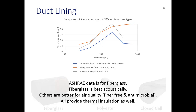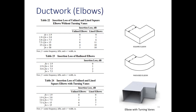Moving on to elbows — there are three types for rectangular duct: the square or mitered elbow, the radiused elbow, and an elbow with turning vanes. The main purpose of turning vanes is to keep airflow as laminar as possible, since turbulent airflow is acoustically bad — it produces noise. Turning vanes help minimize turbulence at the elbow.